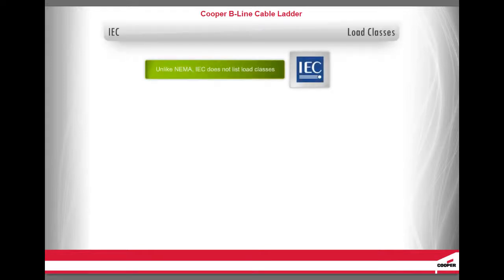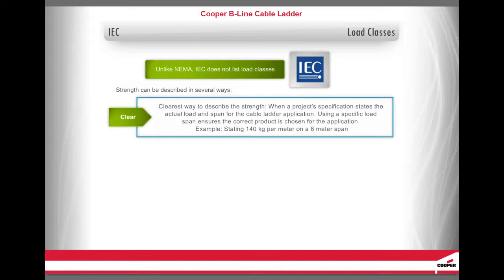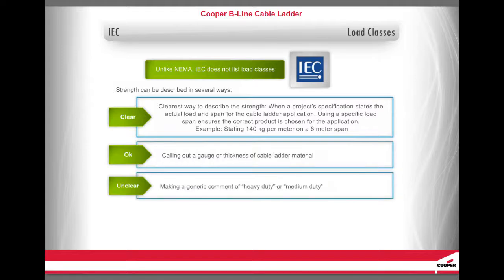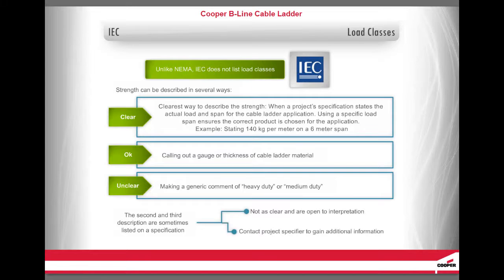Unlike NEMA, IEC does not list load classes. In the IEC specifications, the strength can be described in several ways. First, the clearest way is when the project specification states the actual load and span for the cable ladder application — for example, stating 140 kg per meter on a 6-meter span. Second, calling out a gauge or thickness of the cable ladder material. Third, making a generic comment of heavy duty or medium duty. The second and third descriptions are sometimes listed on a specification but are not as clear and are open to interpretation. In this situation, it would be best to contact the project specifier to gain additional information.